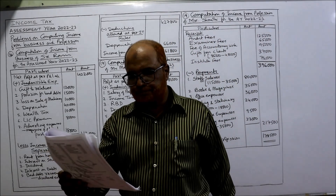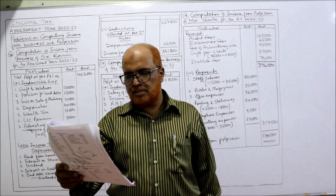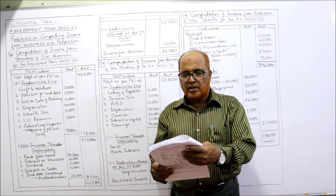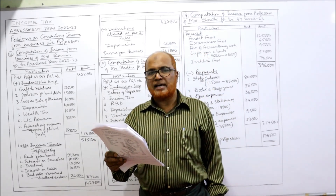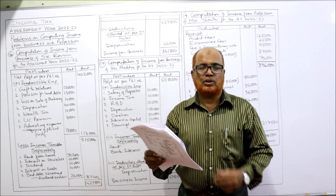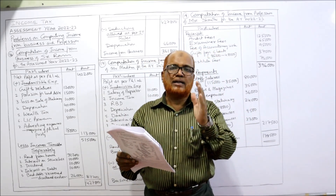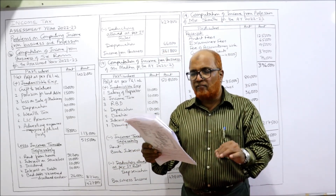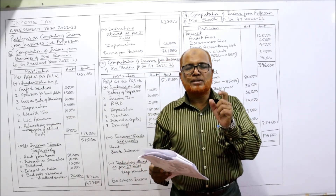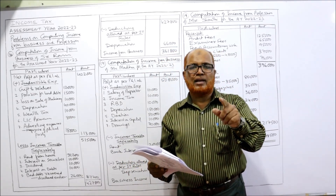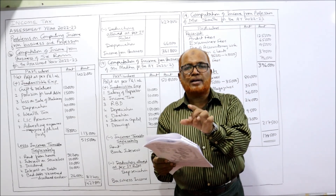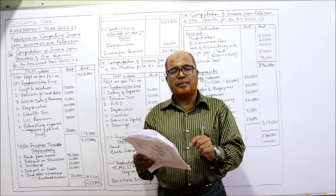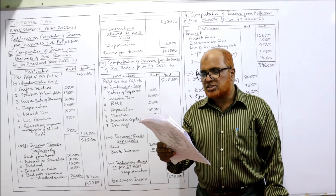Now see the 16th problem. Sri Ram is the proprietor of a business. His profit and loss account for the year ending 31st March 2020 is given. The net profit as per profit and loss account is 4,02,000. The first adjustment is allowable depreciation: 66,000. This 66,000 is the depreciation allowed as per IT rules. Whatever depreciation is debited to the profit and loss account will be disallowed, and this allowable depreciation will be allowed as deduction.